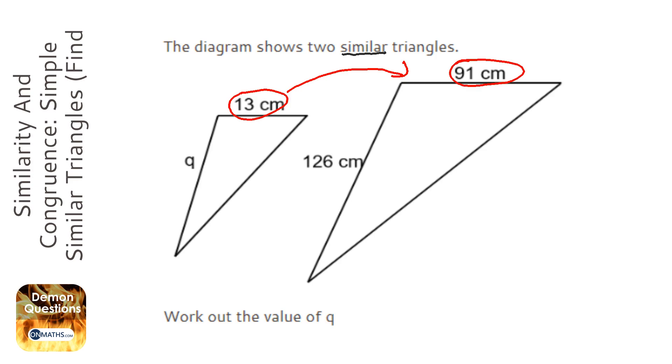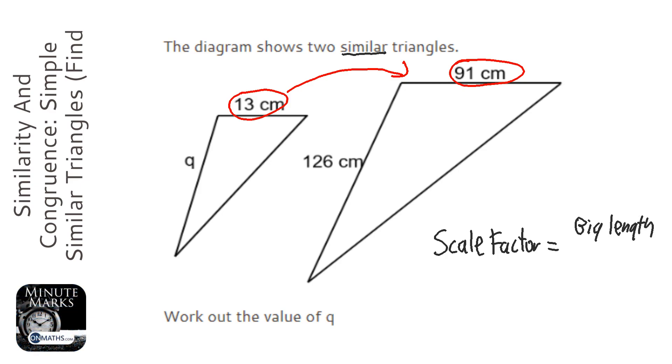Now the thing we times them by is called the scale factor. To work out the scale factor we do big length, so the length in the big shape, divided by small length. The lengths are what we call corresponding, which means they're the same length. So if you put a little bit of blue tack on that length and then enlarged it, it's the one the blue tack will be on.